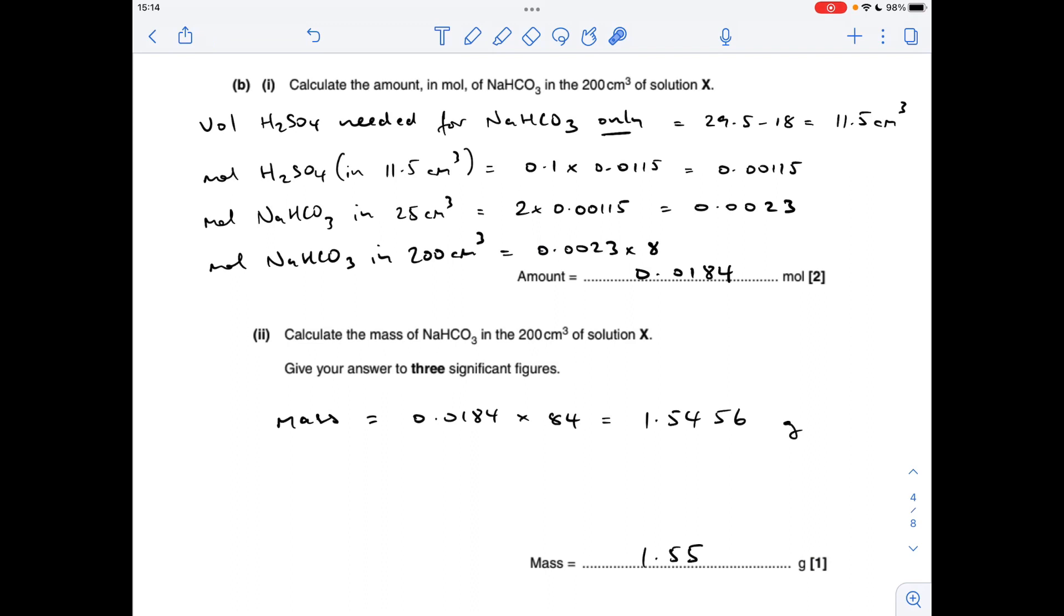And then the second part follows on from that: the mass of sodium hydrogen carbonate in that 200 cm cubed solution of X. We've just established there's that many moles of sodium hydrogen carbonate in the solution. So all we need to do is multiply by the MR of sodium hydrogen carbonate, which is 84. You get a calculated value, and to three significant figures, it's 1.55 grams. Well done if you got that bit right. That's tricky, I think.